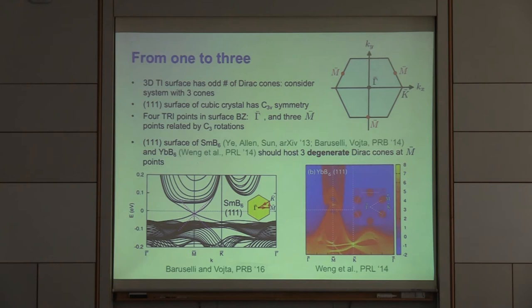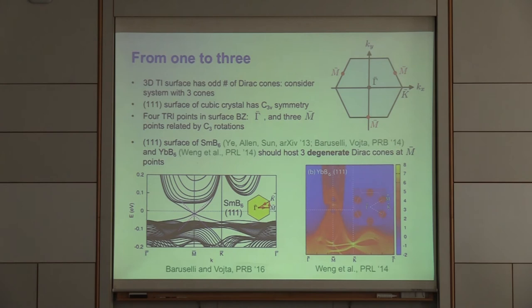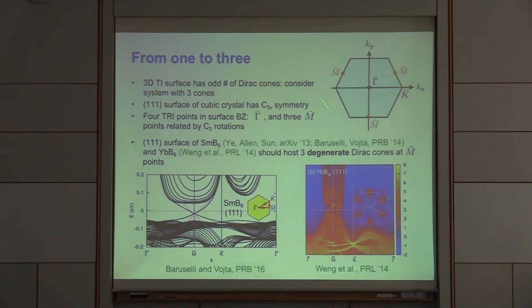In the remaining time I'll discuss the next case: three Dirac fermions. Since we must have an odd number of Dirac fermions, the next case after one is three. If you take the 111 surface of a cubic crystal, generically it has C3V symmetry. The surface Brillouin zone has four time-reversal-invariant momenta: the gamma point and three M-points related by C3 rotations. If the Dirac cone is at the M-points rather than the gamma point, you will have three degenerate Dirac cones.